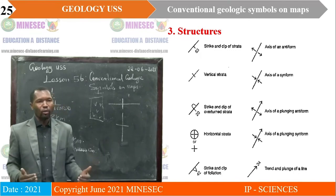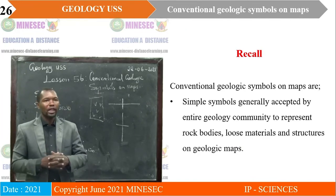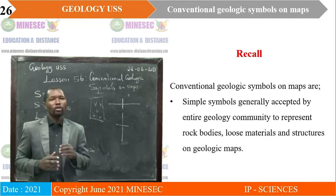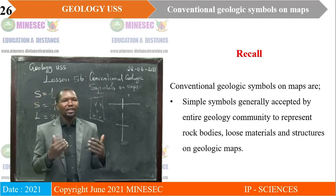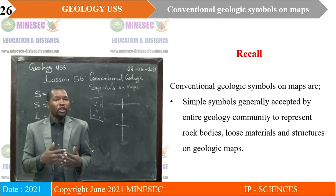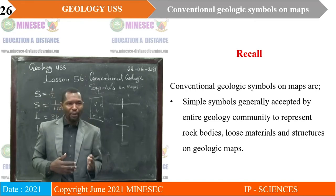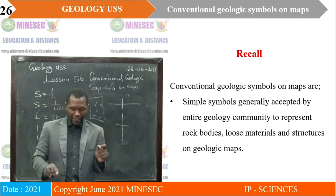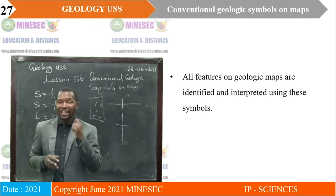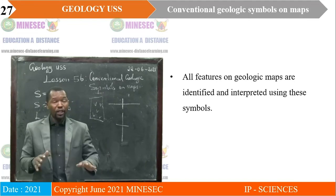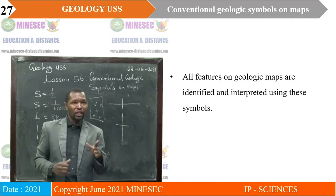To recall: conventional geologic symbols on maps are simple symbols generally accepted by the entire geologic community to represent rock bodies, loose materials, and structures on geological maps. All features on geologic maps are identified and interpreted using these symbols — not others. You do not impose your own symbols; they must be those that are generally accepted.